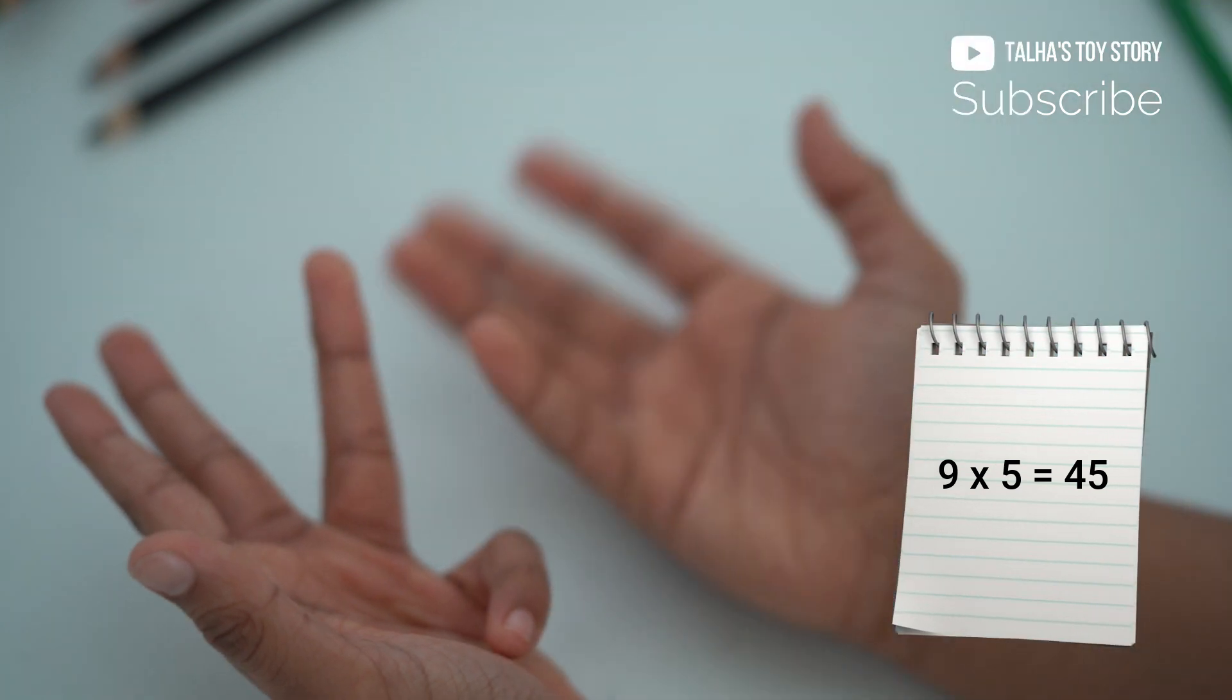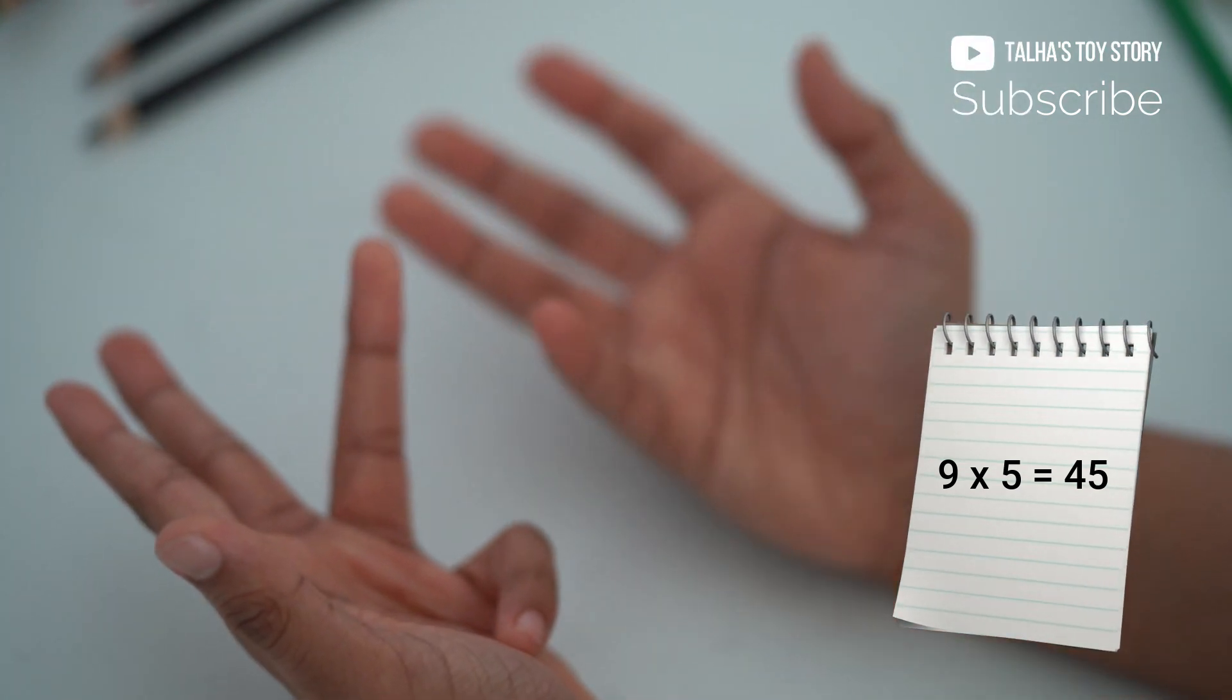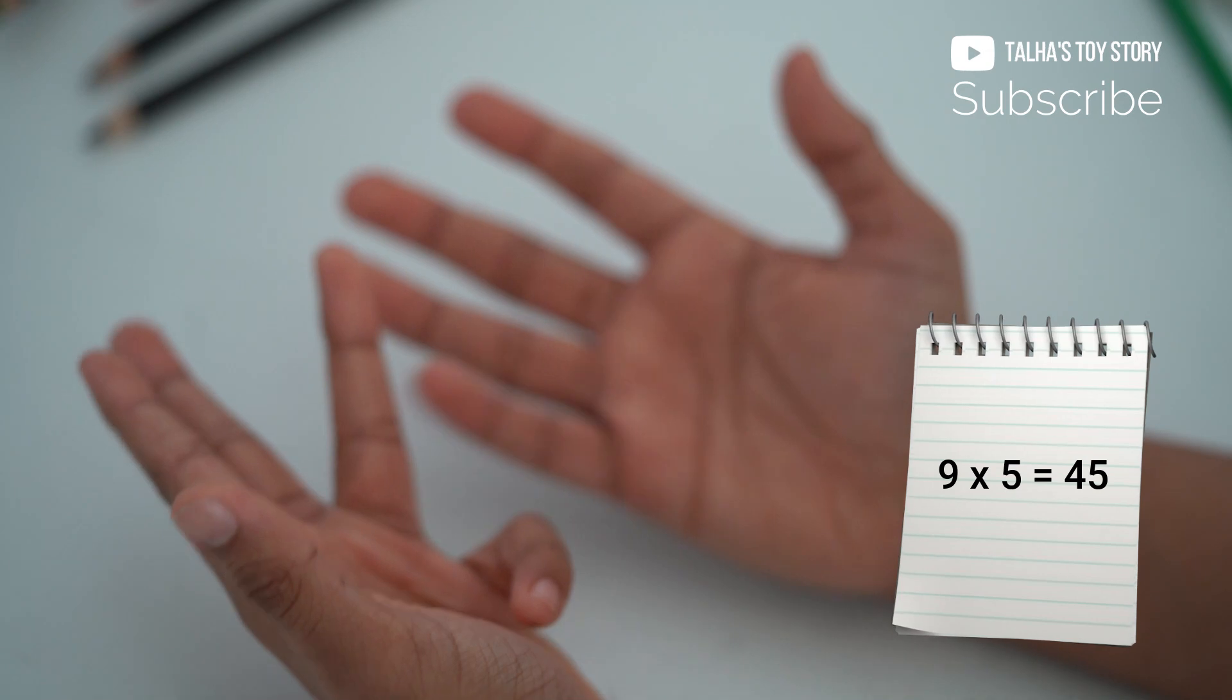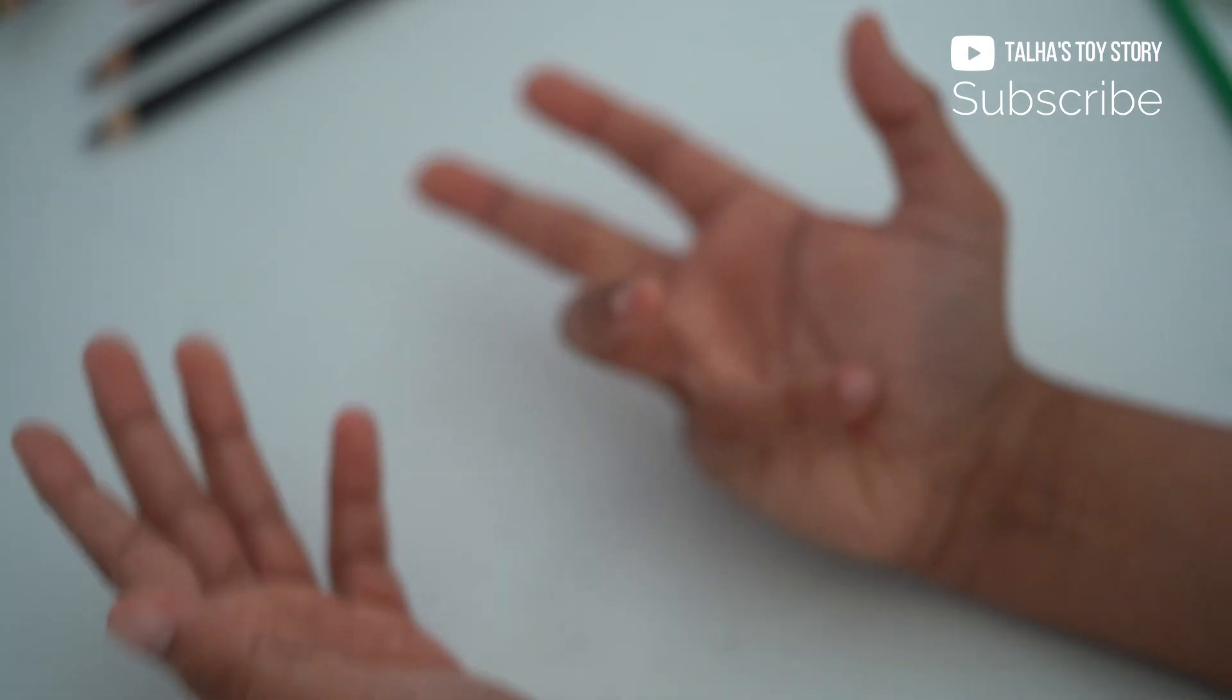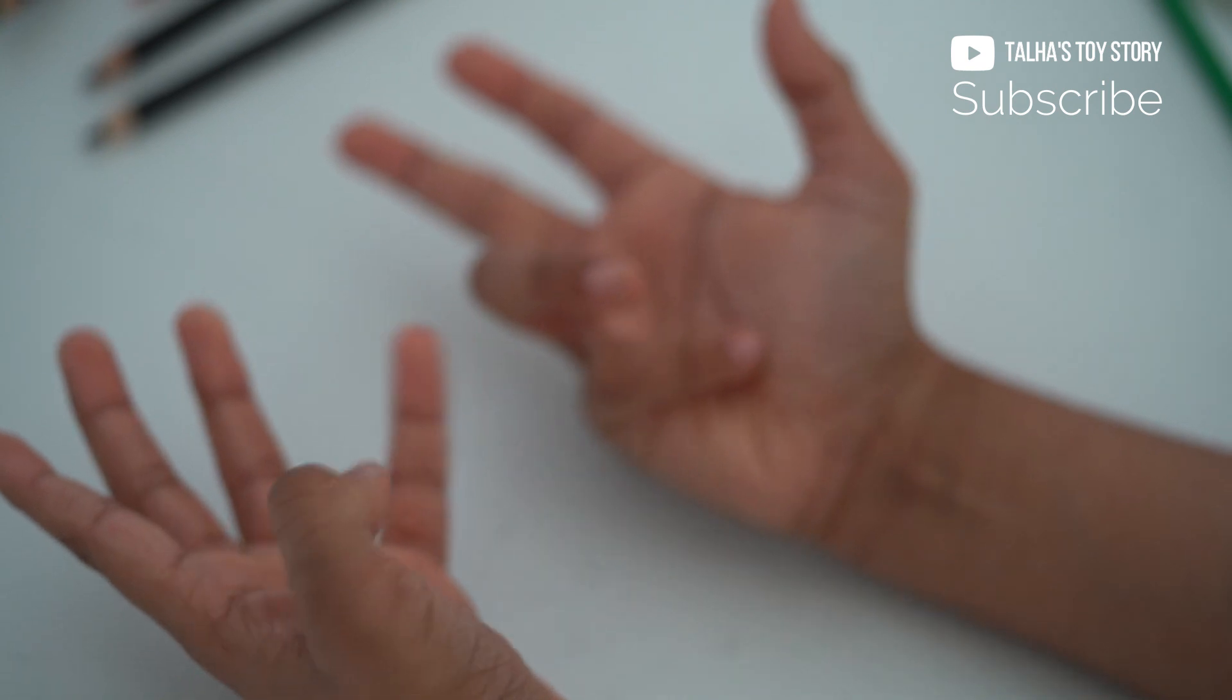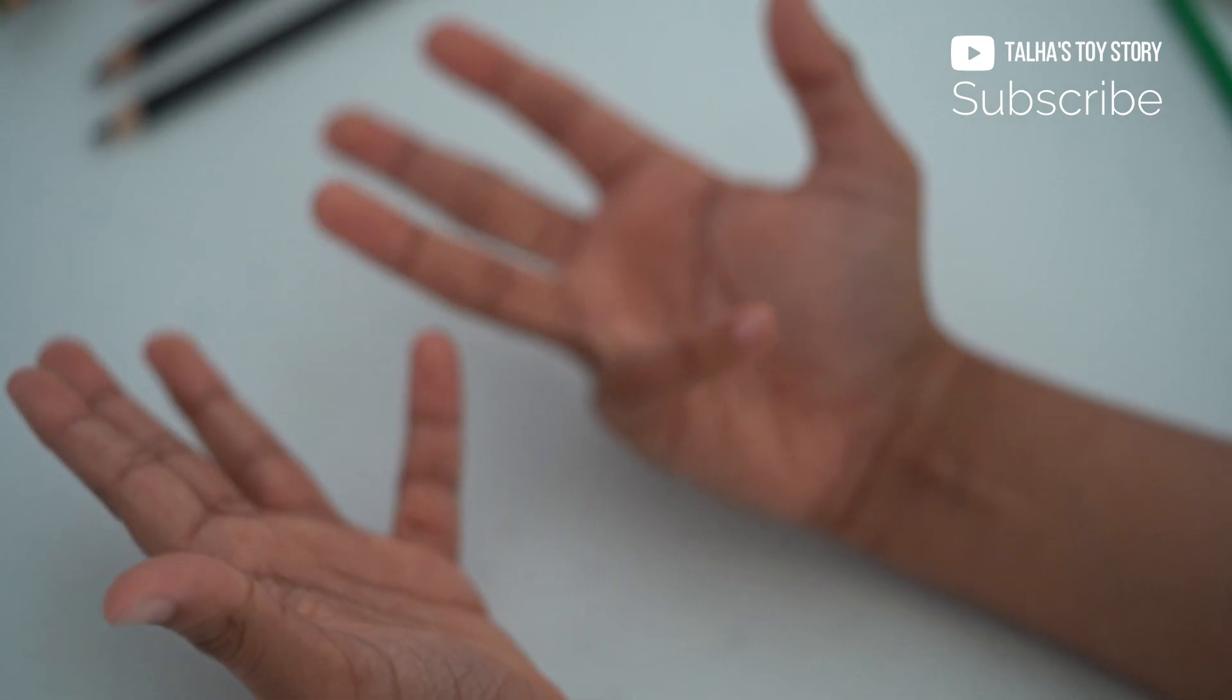5 times 9 is 45. Now we have this angle to show. We have this angle to show, and here is 4.